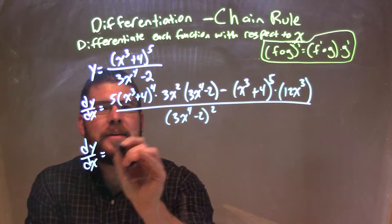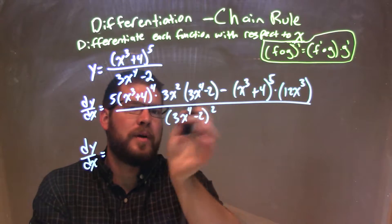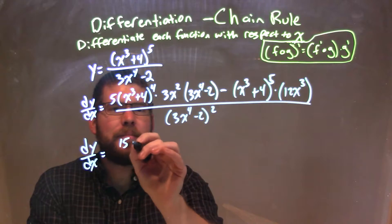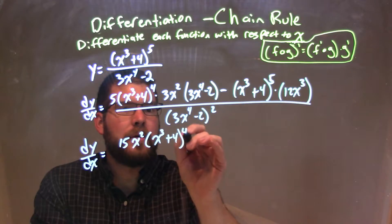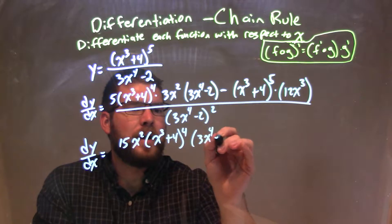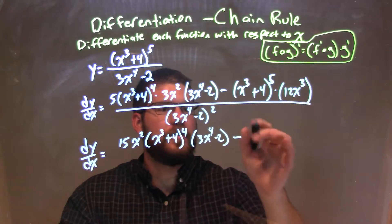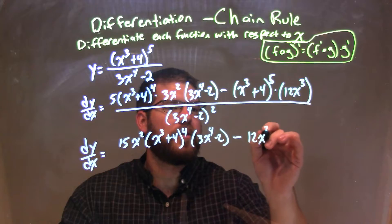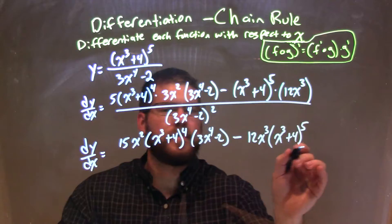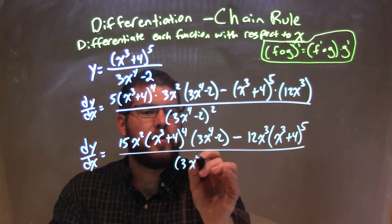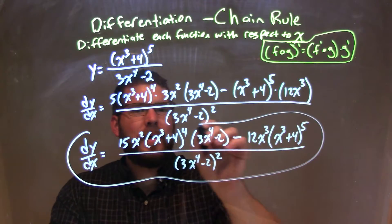So when I simplify this, I have dy dx, I just kind of put my coefficients out front. I have 15 here, x squared times x to the third plus four to the fourth power, times 3x to the fourth minus 2, subtracted by, I'm going to pull this negative 12x to the third to the front, so we have 12x to the third times x to the third plus four to the fifth power, all over my denominator, 3x to the fourth minus 2, all squared, and that's actually where I ended in my simplification.